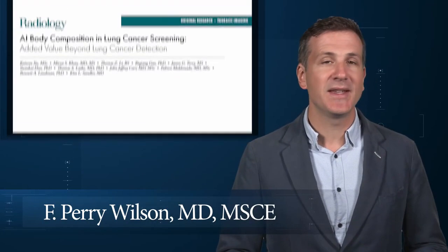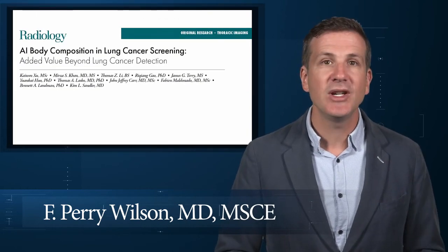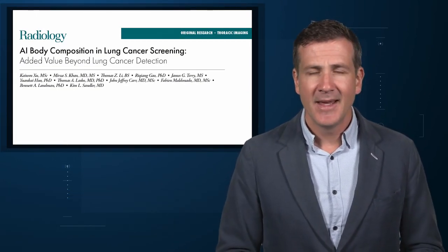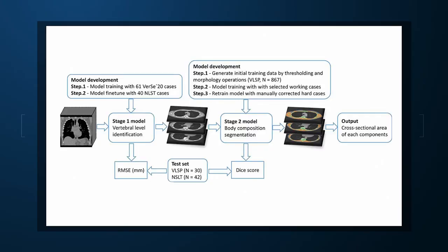I am thinking about AI and CT scans this week thanks to this study, appearing in the journal Radiology from Kai Wen-Ju and colleagues at Vanderbilt. In a previous study, the team had developed an AI algorithm to take chest CT images and convert that data into information about body composition — skeletal muscle mass, fat mass, muscle lipid content, that sort of thing. This is a beautiful example of how AI can take data we already have sitting around and do something new with it. While the radiologists are busy looking for cancer or pneumonia, the AI can create a body composition report — two results from one data stream.